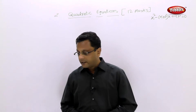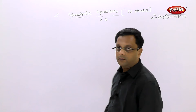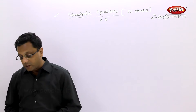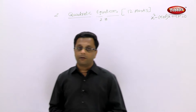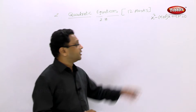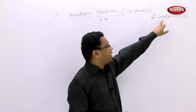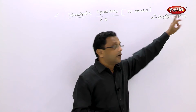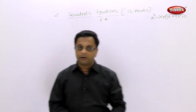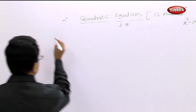Let us solve Exercise 2.8. The first question is very easy — form the quadratic equation when roots alpha and beta are given. You have to form the quadratic equation by using this: find out the value of alpha plus beta, then find out the value of alpha times beta, substitute in the equation and you will get the values.